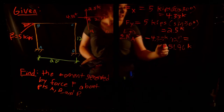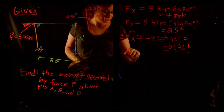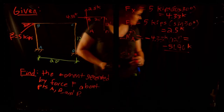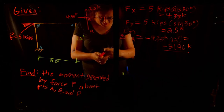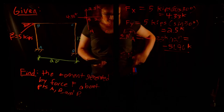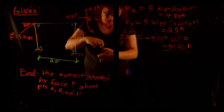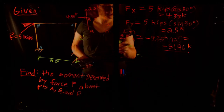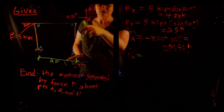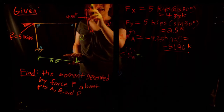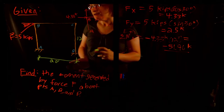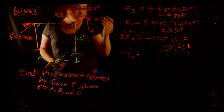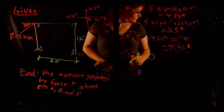Sum of moments about point B — counterclockwise positive. Both the x and y components will have zero moment about point B, because their lines of action pass directly through point B. So the moment about B equals zero.